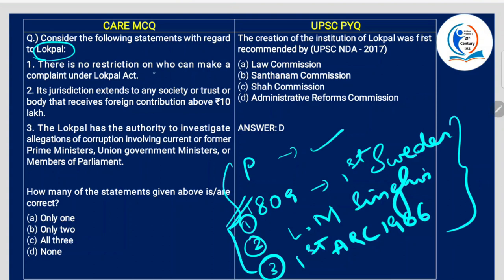There is no restriction on who can make a complaint under the Lokpal Act — anybody can make a complaint, but whether it falls within the jurisdiction of Lokpal, the Lokpal will decide. So this is correct. The jurisdiction extends to any society or trust or body that receives foreign contribution above 10 lakhs.